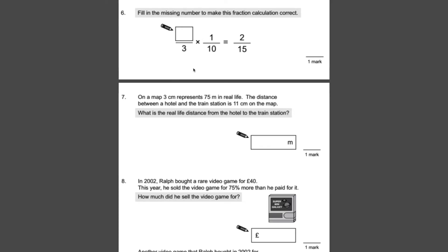Number six. Fill in the missing number to make this fraction calculation correct. So we want our answer to be 2 fifteenths. And at the moment, if we were to multiply our fraction, let's just assume that was a 1 in there. 1 times 1 would be 1, so that bit's not correct. 3 times 10, because remember we times the top and the bottom together, 3 times 10 is 30. So we'd end up with 30ths at the bottom. So what we need to try and do is get 30ths at the bottom that is equivalent to 2 fifteenths.